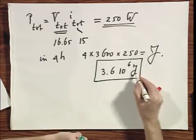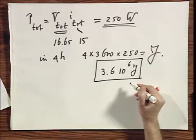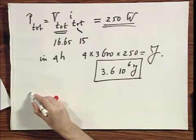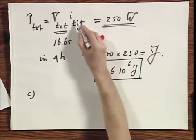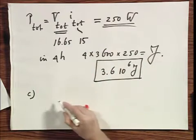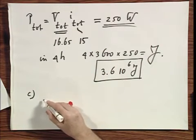Almost a little more than three and a half million joules. But now comes an interesting question under C. As I am charging, how much energy is dissipated in that internal resistance in the battery?